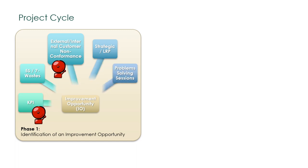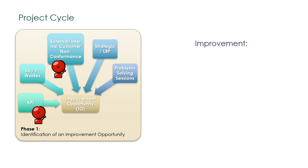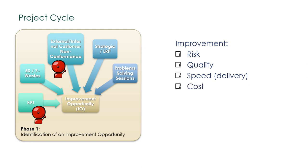Problems that cannot be solved using conventional problem-solving methods also feed into the hopper. What these improvement opportunities have in common is that they all intend to improve operational factors of risk, quality, speed, cost, and people engagement and development — and they potentially contribute to driving the organization towards its breakthrough objectives. This is why they need to be prioritized.